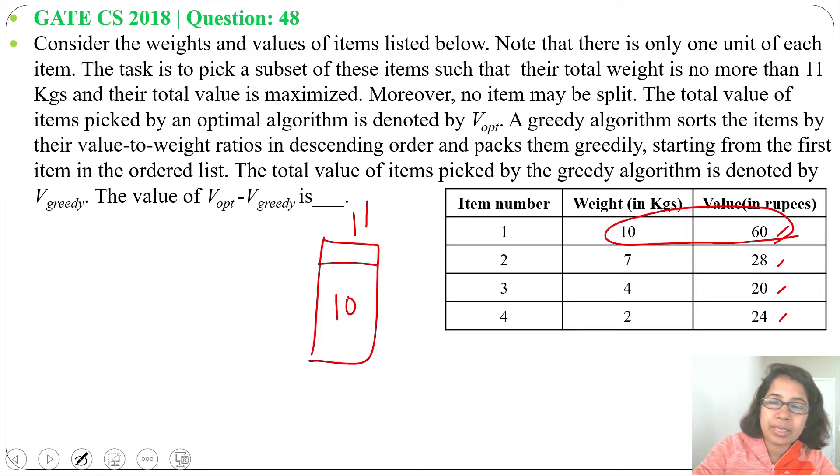After 10 kg, just 1 kg is left, and in that 1 kg space it cannot pack any other item as other items weigh more: 7, 4, and 2, so no one can fit in the bag. For item 1, value is 60, so V_optimal will be 60.